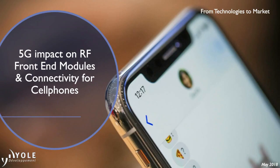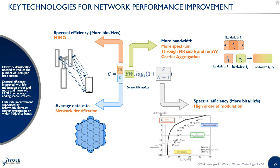Thank you, David and Stéphane. As everyone knows from the Shannon equation, network technology upgrades are supported by several key technologies. First is network densification, which will provide average data rate improvement for every user through the implementation of small cells. Also, every slice of radio bands has to be optimized to get the most out of it.